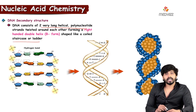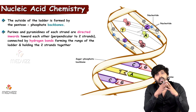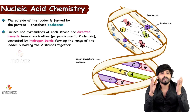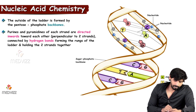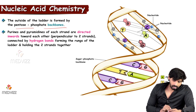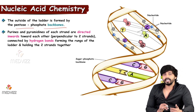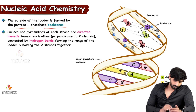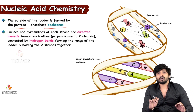The DNA is shaped like a coiled staircase or ladder. According to Watson and Crick, the sugar and phosphate groups are on the outside forming the backbone, while the bases are packed inside. The outside of the ladder is formed by the pentose and phosphate backbones, and the purines and pyrimidines — adenine, guanine, thymine, and cytosine — project inward. This secondary structure must follow Chargaff's rule.